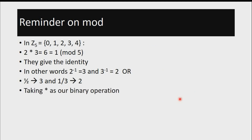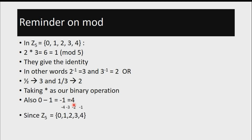We are using multiplication as our binary operation, which is simply the operation we are using to operate on the integers. Another concept we have to know is that in mod 5, 0 minus 1 is equal to negative 1, and this is equal to 4. Another way of expressing elements in mod is negative notation — we can express them using negatives from the last element. So 4 is also equal to negative 1, 3 is negative 2, 2 is negative 3, and 1 is negative 4. When you subtract 1 from 0 and arrive at negative 1, this is just the same as 4.